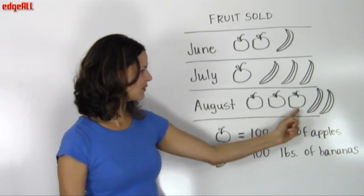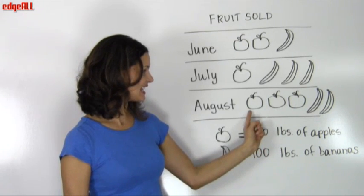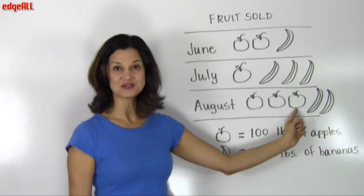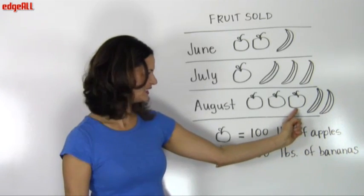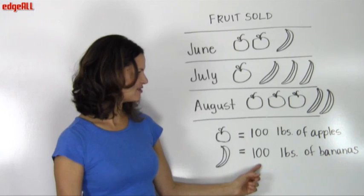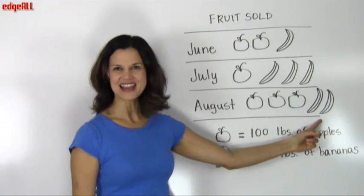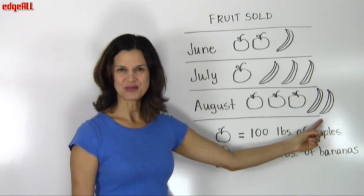And in August, since we have three apples, and each apple is worth 100 pounds, we can see that in August, we had 300 pounds of apples sold, and with the two bananas, at 100 pounds each banana, we can see that the August sale of bananas is 200 pounds.